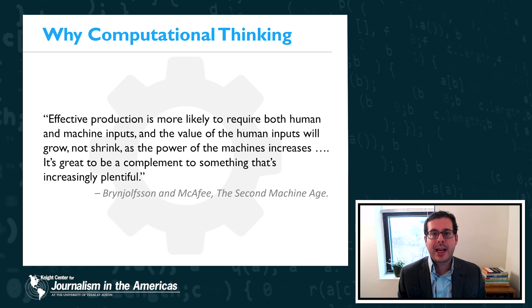They bring in some economics principles and they argue that effective production is more likely to require both human and machine inputs. What that really means is creating hybrids or blends between computer and human. And I would argue that computational thinkers, people who have mastered computational thinking will be more effective at exploiting the capabilities of automation and algorithms and in designing those future hybrid workflows that best take advantage of both computer and human.